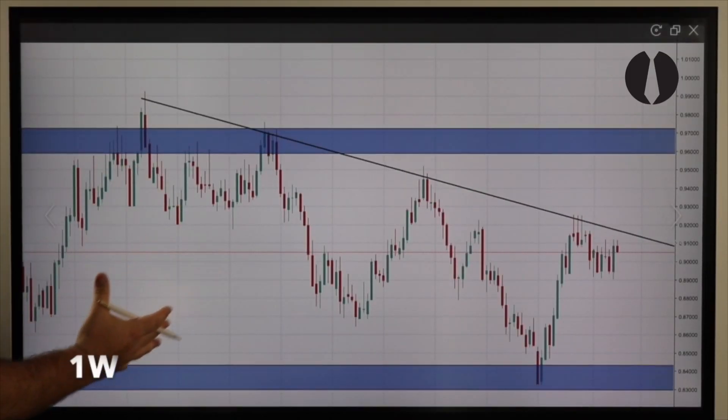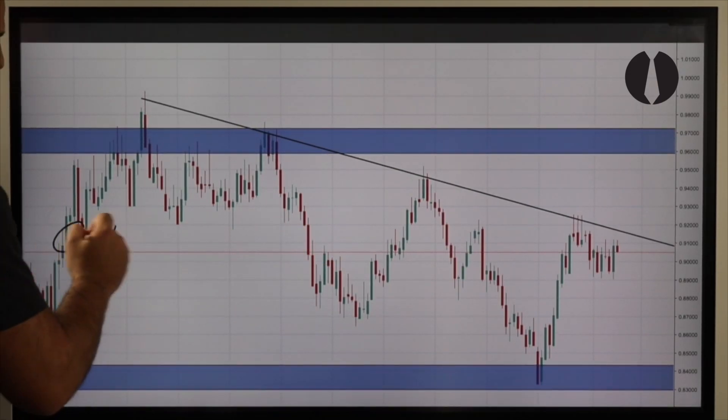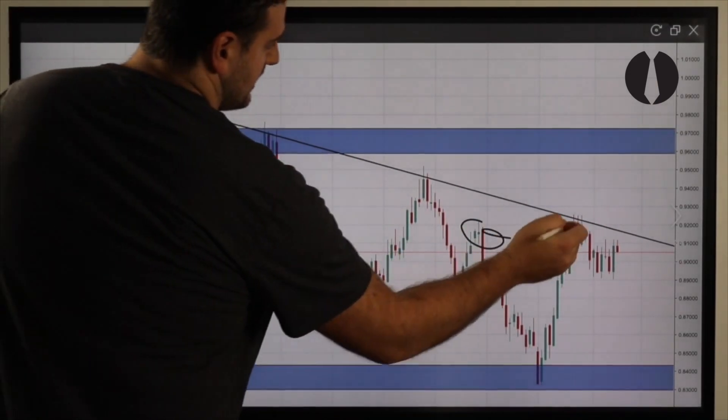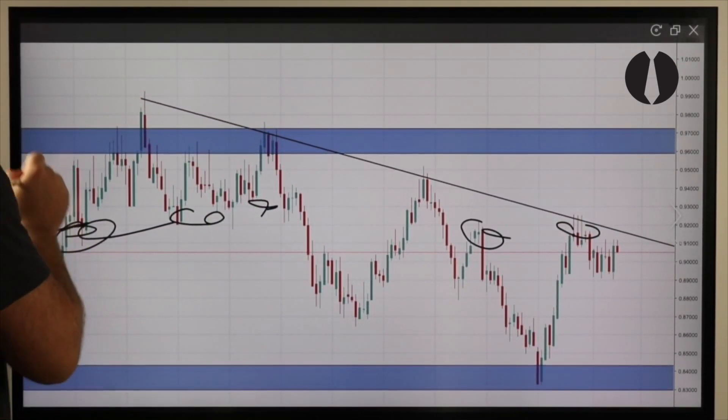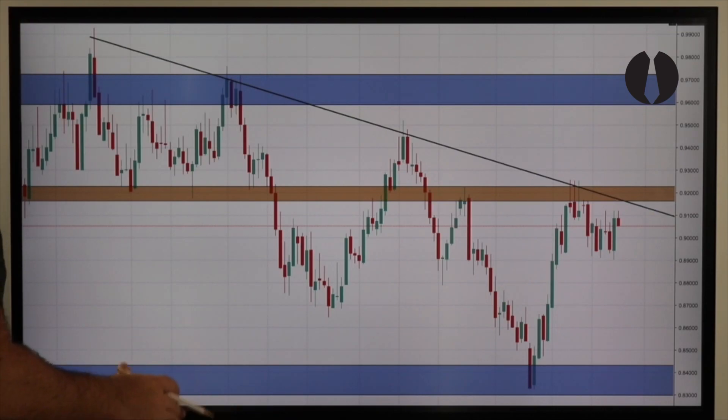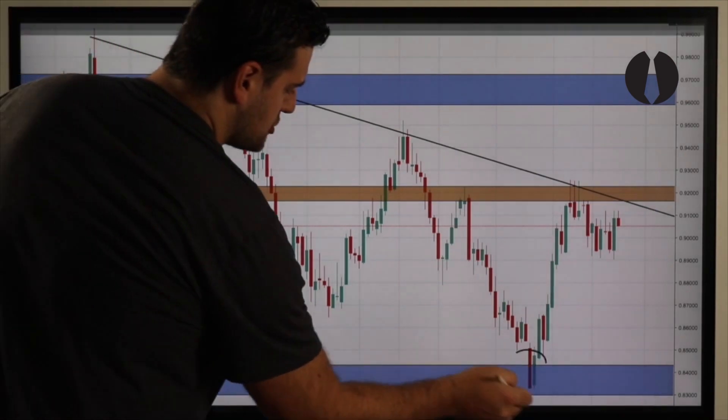We're only on the monthly, so now let's take it to the weekly. On to the weekly, we're now looking for our weekly mid-range zone. On a horizontal level I see buy pressure turning into sell pressure, so we identify our weekly mid-range zone.